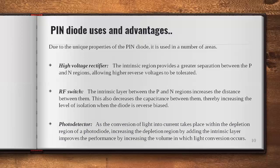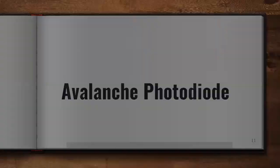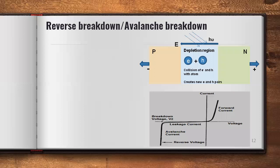Before explaining the avalanche photodiode, I am going to explain the conditions for avalanche breakdown. Here is a PN junction diode connected in reverse bias — P is connected to the negative terminal and N to the positive terminal of the battery. When light enters the depletion region and the light energy is more than the energy band gap, it creates electron-hole pairs. In addition, the electric field strength is also more because a high reverse voltage is applied, making the electric field across the diode stronger.